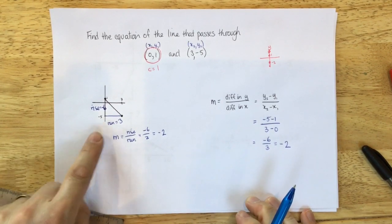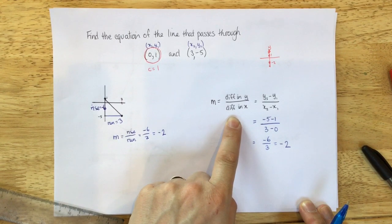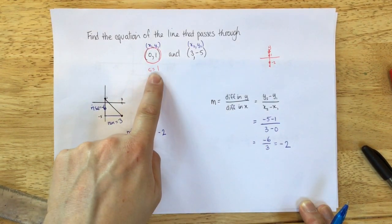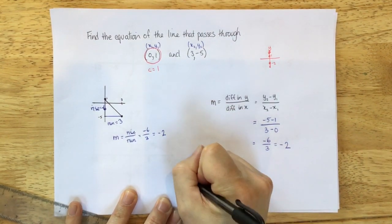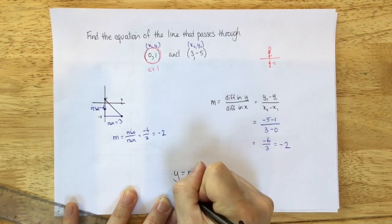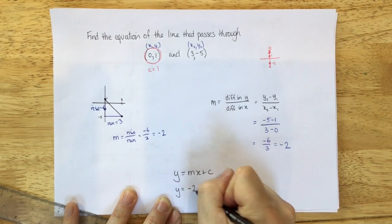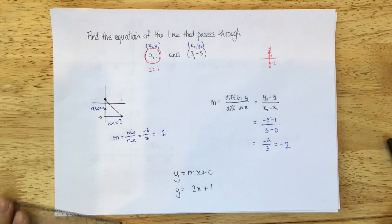So whether we do this by a quick sketch and using rise over run, or whether we do it by using the coordinates, we still get the same gradient. And we still know the y-intercept is 1. So when we put this into our final answer, y equals mx plus c, that becomes y equals, instead of m, we have minus 2. And instead of c, we have 1. So minus 2x plus 1.